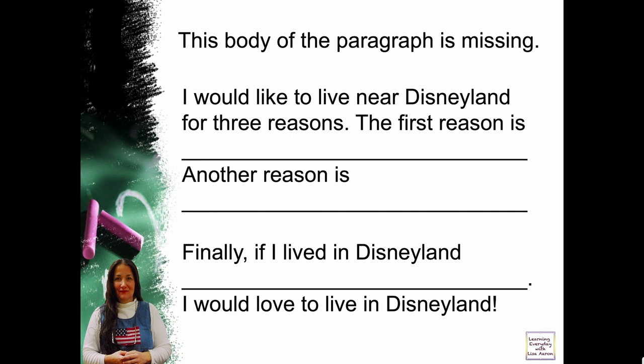Here is a paragraph that uses transitions: 'I would like to live near Disneyland for three reasons. The first reason is... give your reason. Another reason is...' — these are called transitions. 'Another reason' is a transition. 'Give your reason.' And the word 'finally' — that's another transition — 'Finally, if I lived in Disneyland, give your reason.' And then your concluding sentence: 'I would love to live in Disneyland.' That's how you get your thoughts moving along when you're writing a paragraph.